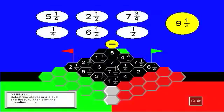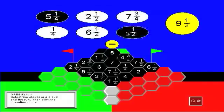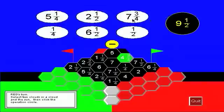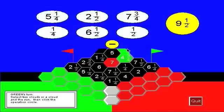So example, green goes first. Let's say if it wanted four and three fourths. That looks like five and a fourth minus one half. And if red wanted to block it with seven, so that would be nine and a half minus two and a half. So that's a review of the games that come with the program.